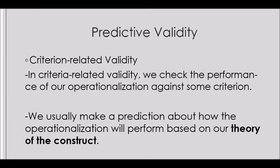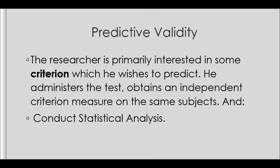So what is predictive validity? It is in fact criterion-related validity. In criterion-related validity, we check the performance of our operationalization against some criterion. We usually make a prediction about how the operationalization will perform based on our theory of the construct. Remember, in predictive validity, your theory of the construct is very important. The researcher is primarily interested in some criterion which he wishes to predict. He administers the test, obtains an independent criterion measure on the same subjects, and finally conducts statistical analysis.